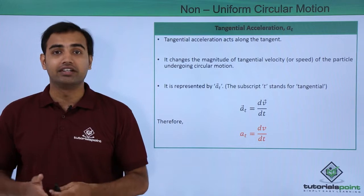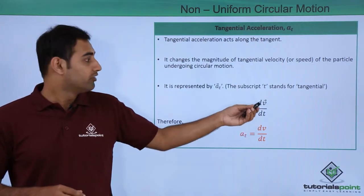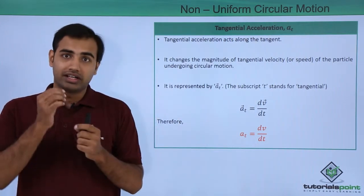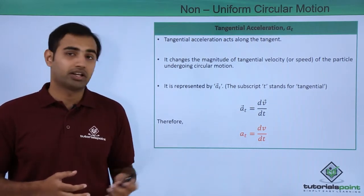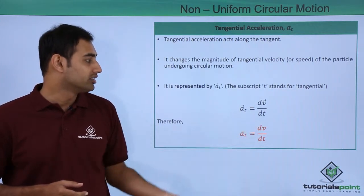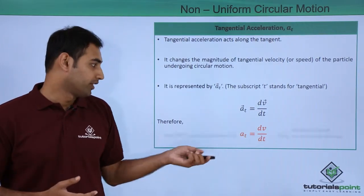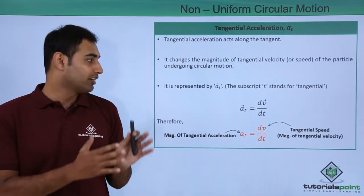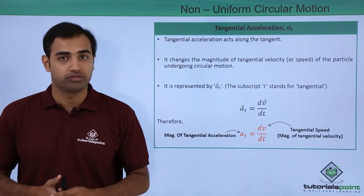That is the job of At, the tangential acceleration. At vector can be expressed as dV vector by dt, where V vector is the instantaneous velocity vector. Because At vector is either parallel or anti-parallel to the velocity vector, the same relationship can be written in terms of magnitudes: the magnitude of tangential acceleration At equals dV by dt, where V is the magnitude of instantaneous velocity. Please take a good look at these two equations as they will be very important for problem solving in non-uniform circular motion.